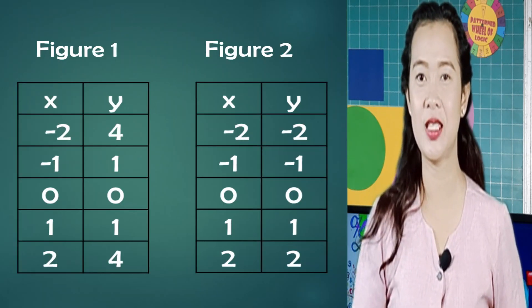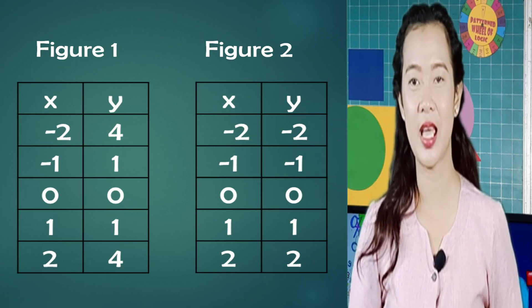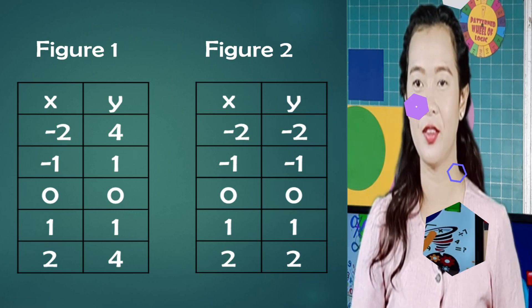As you can see in the first table, there are different values of x but there are the same values of y. In the second table, all the values in both x and y are different. If we draw a horizontal line on the first figure, the horizontal line will intersect twice at the graph. If we draw a horizontal line on the second graph, it will intersect only once. Remember that we can draw a horizontal line on any part of the graph to see how many times the graph intersects the horizontal line. If there is only one intersection, or there are no same values of y in the table of values, it is called a one-to-one function.